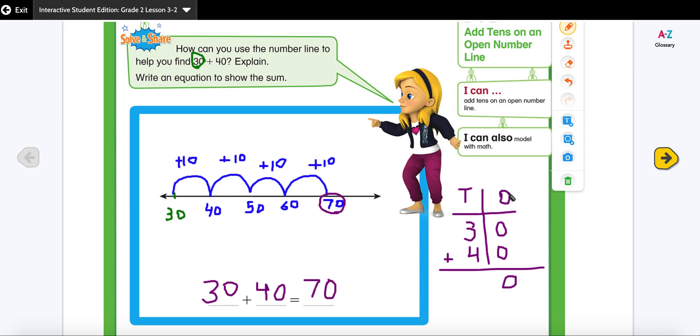Now I started with my ones. I added 0 plus 0 is 0. Now I'm going to add my tens. 4 plus 3 is 7. And you see that my answer is same. So that means I have used the correct strategy.